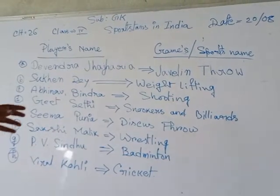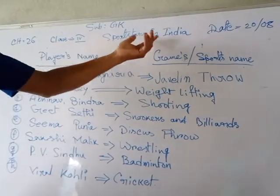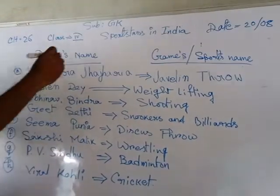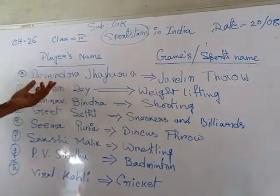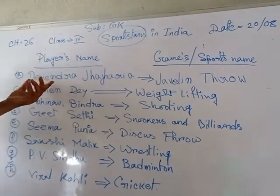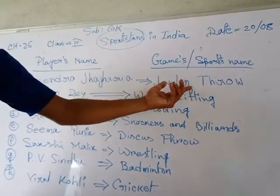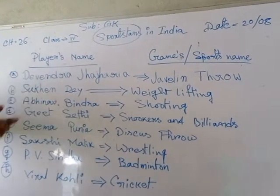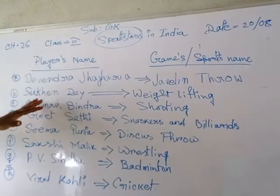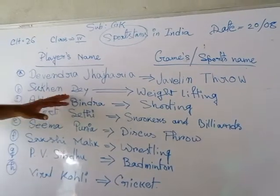Good morning, dear students. Today I will discuss Class 4 GK: Sports Stars in India — some players' names and the specific sport they play. Devendra Jhajharia is a sports star in India, and his sport is javelin throw. Devendra Jhajharia is the player of javelin throw.